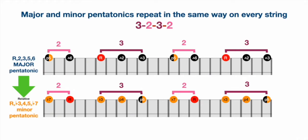Now the cool thing about all of this is that the major and minor pentatonics repeat in the same way on every string. What I'm showing you here on the top part is the major pentatonic scale or the root second third fifth and sixth. Again it repeats in this three two three two fashion. If you're playing in a major pentatonic, the root is the very first part of that three pattern.